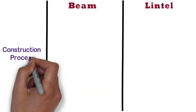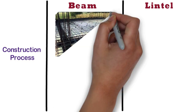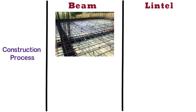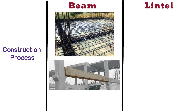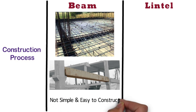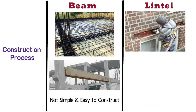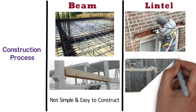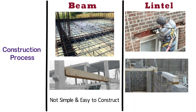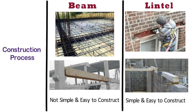Construction Process. The beam is normally casted with the slab as a whole, except in the case of a precast beam. Beams are not simple and easy to construct as compared to lintels. On the other hand, the lintel can be casted separately during the construction of a masonry wall. Precast lintels can also be used. Lintels are simple and easy to construct as compared to beams.